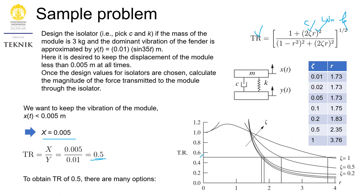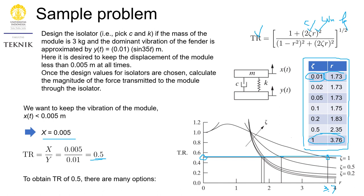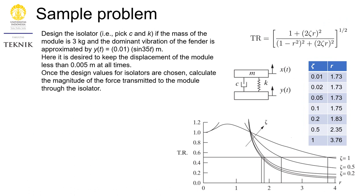On the TR graph, drawing a horizontal line at TR equal to 0.5 shows it crosses many different curves, meaning there are many possible solutions corresponding to different combinations of zeta and R. This is tabulated: for example, if zeta is 0.01, then R is 1.73; or if R is 3.76, then zeta is 1. There are many possible solutions available.